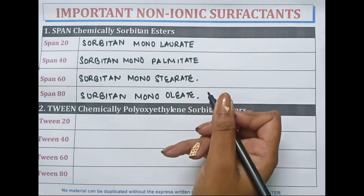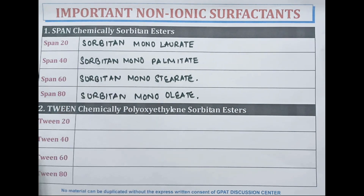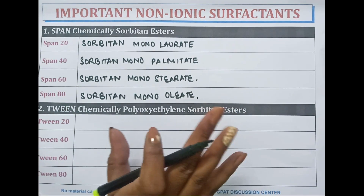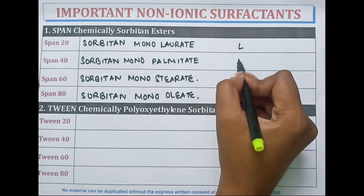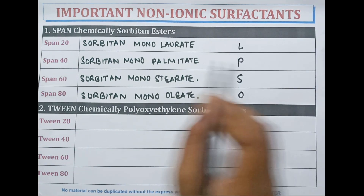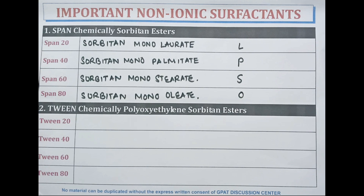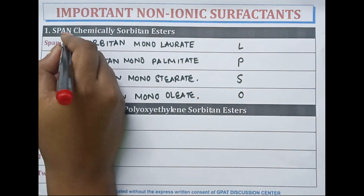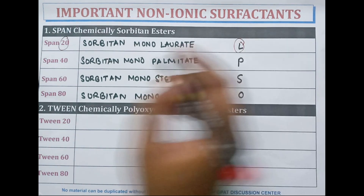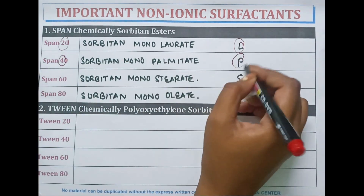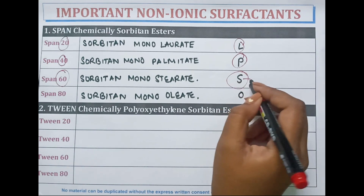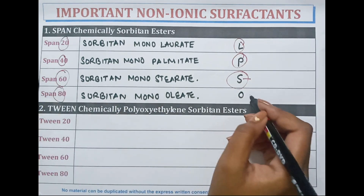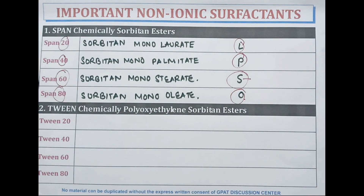A trick to remember the numbers as well as names of Span is the mnemonic LPSO. We can easily remember: 20 for L (laurate), 40 for P (palmitate), 60 for S (stearate), and 80 for O (oleate). LPSO.